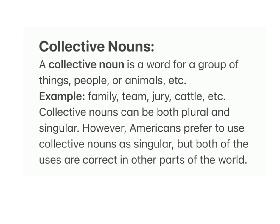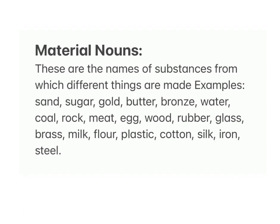Collective nouns: A collective noun is a word for a group of things, people or animals. Examples: family, team, jury, cattle, etc. Collective nouns can be both plural and singular; however, Americans prefer to use collective nouns as singular, but both uses are correct in other parts of the world. Material nouns: these are the names of substances from which different things are made.